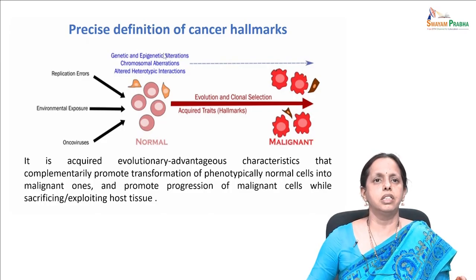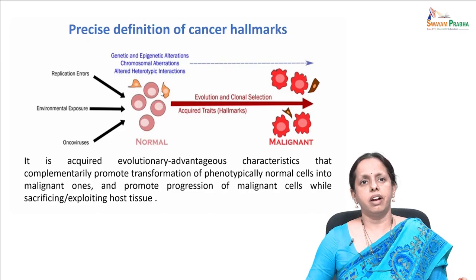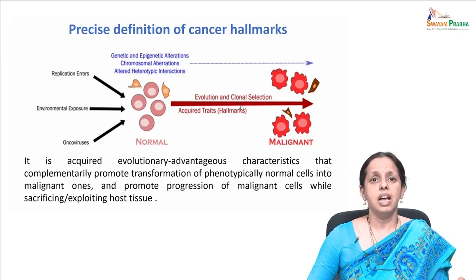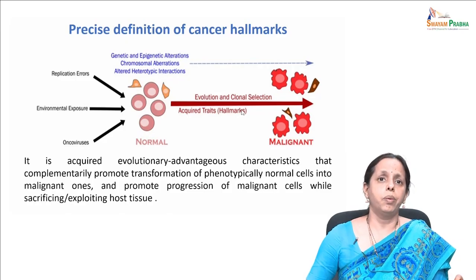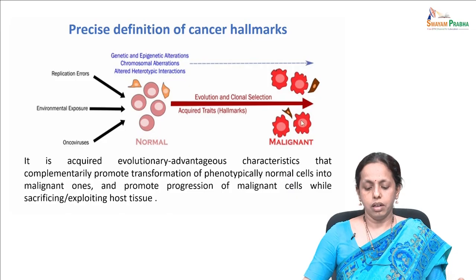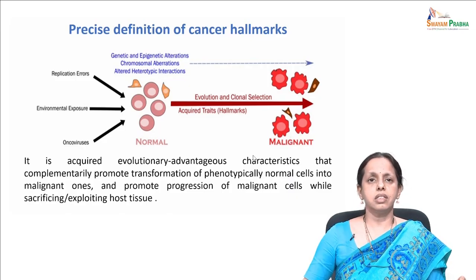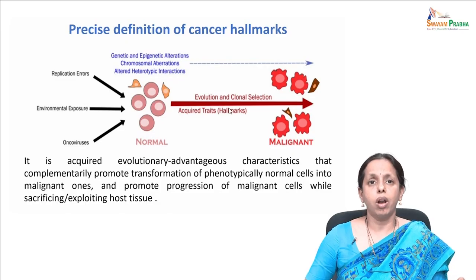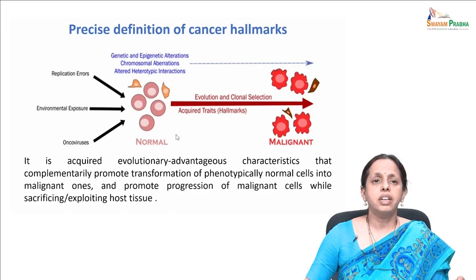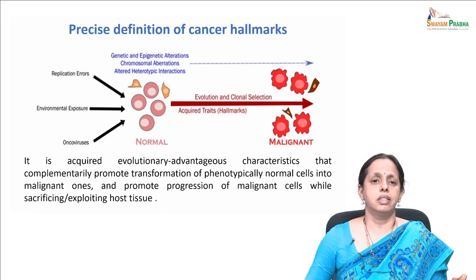After normal cells undergo genetic and epigenetic alterations or altered heterotypic interactions, there is clonal selection. Along with this, hallmarks are acquired and the tumor progression happens. This hallmark is a very key contributing factor towards the progression of a tumor or cancer cell.